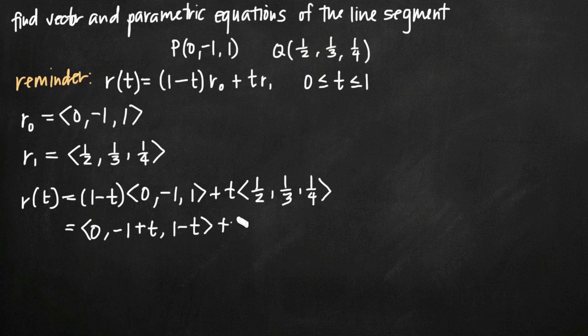So we distributed that. Now we just need to distribute our t across this second vector. So we're going to get the vector here: <1/2·t, 1/3·t, 1/4·t>.